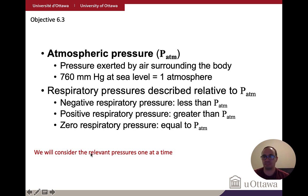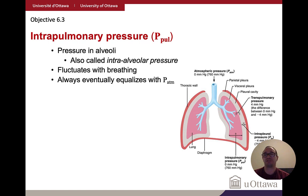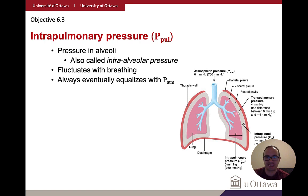The first pressure to consider is intrapulmonary pressure — also called intra-alveolar pressure — which is the pressure within your lungs and alveoli. This fluctuates with breathing but always eventually equalizes with atmospheric pressure. It is represented by the pink area showing the volume of the alveoli.